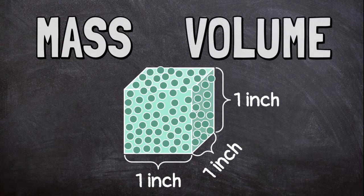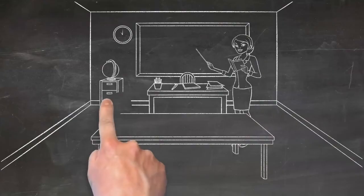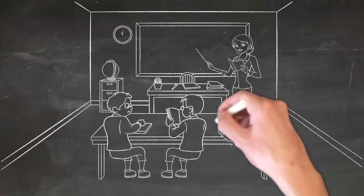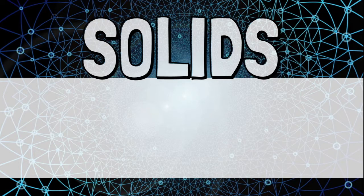Some matter is in a solid state. Most of the objects you see in your classroom are solids, like your pencil, paper, and even the people around you. Solids are easy to identify. They keep the same shape, mass, and volume.